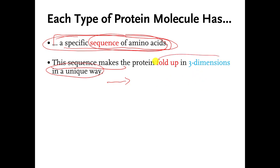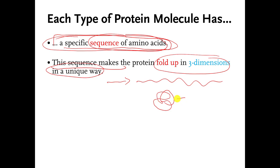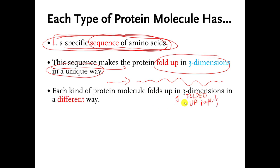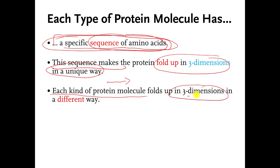In reality, what happens is the order that you connect the amino acids in makes every protein molecule fold up in 3D in its own special way. So even though I have a hundred amino acids and you might think they're like this, what ends up happening in real life when the protein molecule gets made is it might fold up in its own special way. Every different type of protein molecule folds up in 3D in its own special way — one protein molecule might fold up like this, another like that. These are just cartoons; they obviously don't fold up exactly like that.